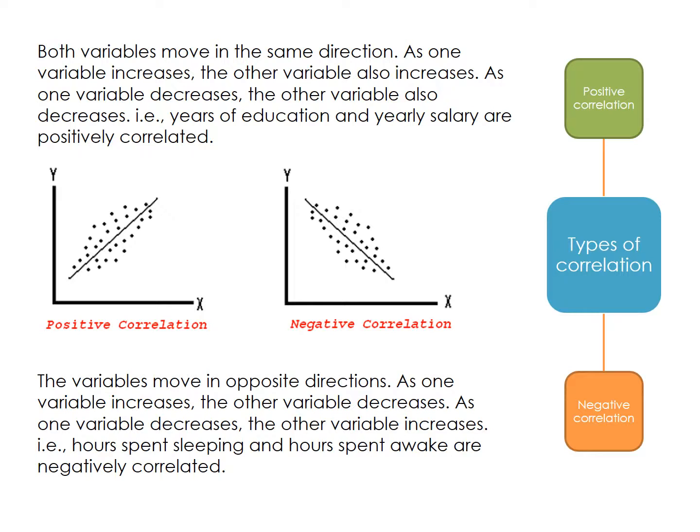The second type is negative correlation: the variables move in opposite directions. As one variable increases, the other variable decreases. As one variable decreases, the other variable increases. An example is hours spent sleeping and hours spent awake, which are negatively correlated.